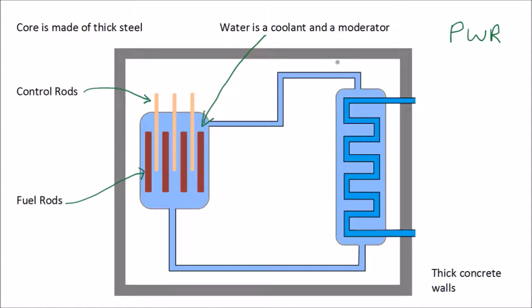The second thing the water does is it acts as a moderator. This means that the neutrons being emitted collide with the water particles which slows them down. The neutrons need to be traveling slowly so that they can be absorbed by the nuclei. So the water also acts as a moderator which helps the fission reaction to continue.